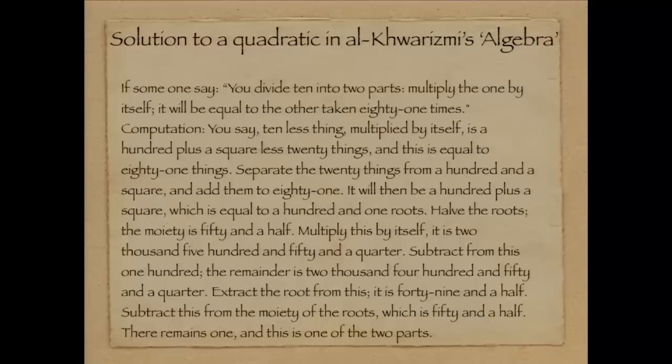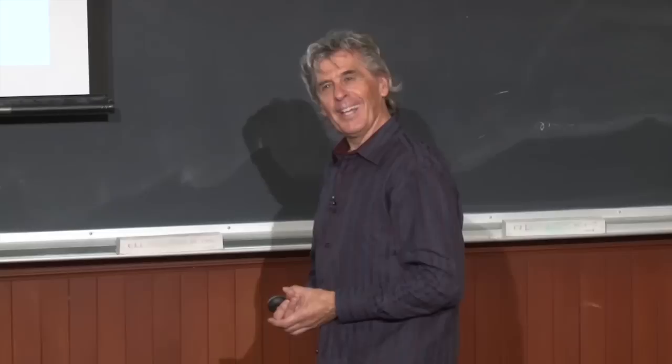Separate the 20 things from 100 and a square, and add them to 81. It will then be 100 plus a square, which is equal to 101 roots. Halve the roots — the moiety, and we'll come back to that in a minute, is 50 and a half. Multiply this by itself: it is 2,550 and a quarter. Subtract from this 100; the remainder is 2,450 and a quarter. Extract the root from this: it is 49 and a half. Subtract this from the moiety of the roots, which is 50 and a half. There remains one, and this is one of the two parts.